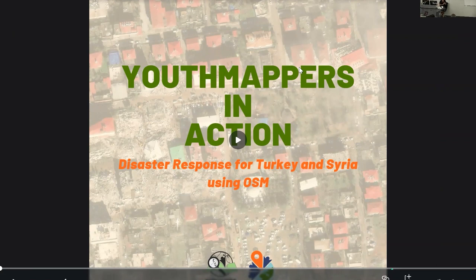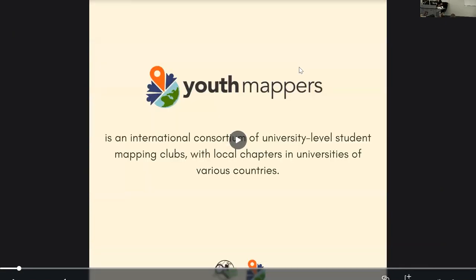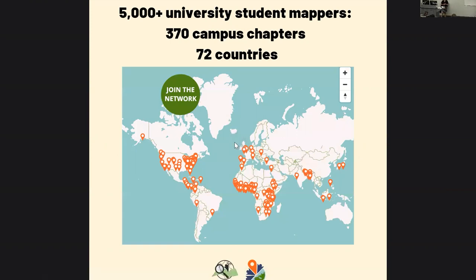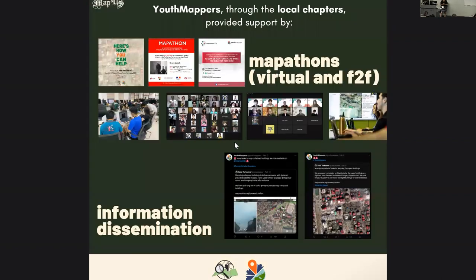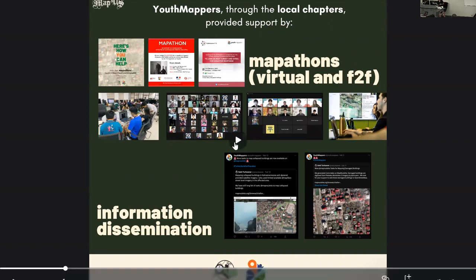I am also a regional ambassador of Youth Mappers. If you're not yet familiar with Youth Mappers, it's an international consortium of university-level student organizations with local chapters in universities. We now have more than 5,000 university student mappers in 370 campuses in 72 countries.